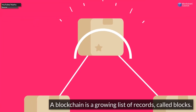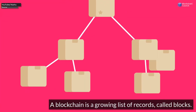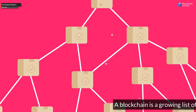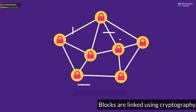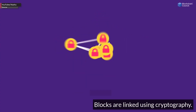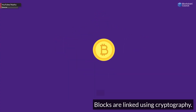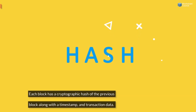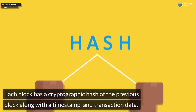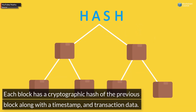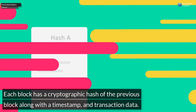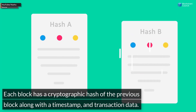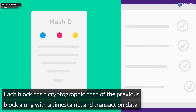A blockchain is a growing list of records called blocks. Blocks are linked using cryptography. Each block has a cryptographic hash of the previous block, along with a timestamp and transaction data.